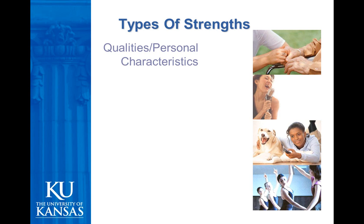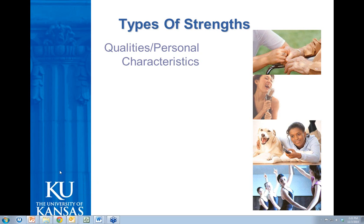Since we're talking about the strengths model, I want to talk about what we mean by strengths. Usually when we ask different audiences to think of someone they know and name that person's strengths, we kind of go to qualities and personal characteristics — that a person is hardworking, has a great sense of humor, is honest or creative. While these are good things to know about people, they're actually the least important of all the four types of strengths in terms of helping people move forward in their recovery. Often when sites thought they were already working from a strengths perspective, you'd find a little box on the fourth page of a treatment plan that says 'what are your strengths?' and that's what you'd see — qualities and personal characteristics.